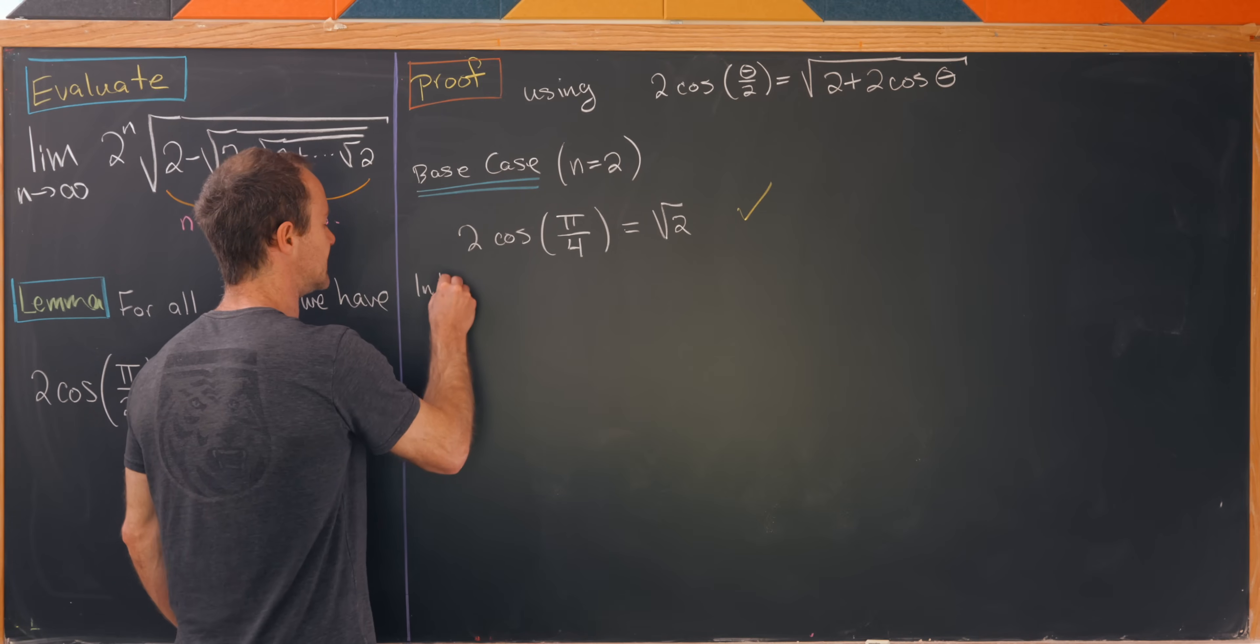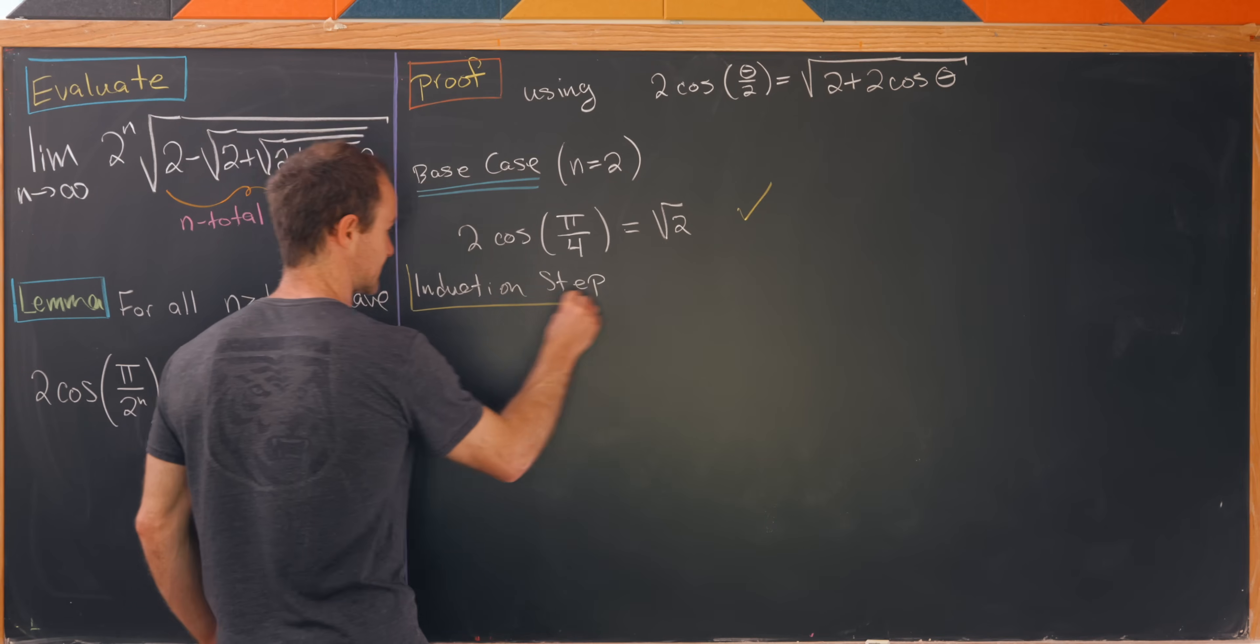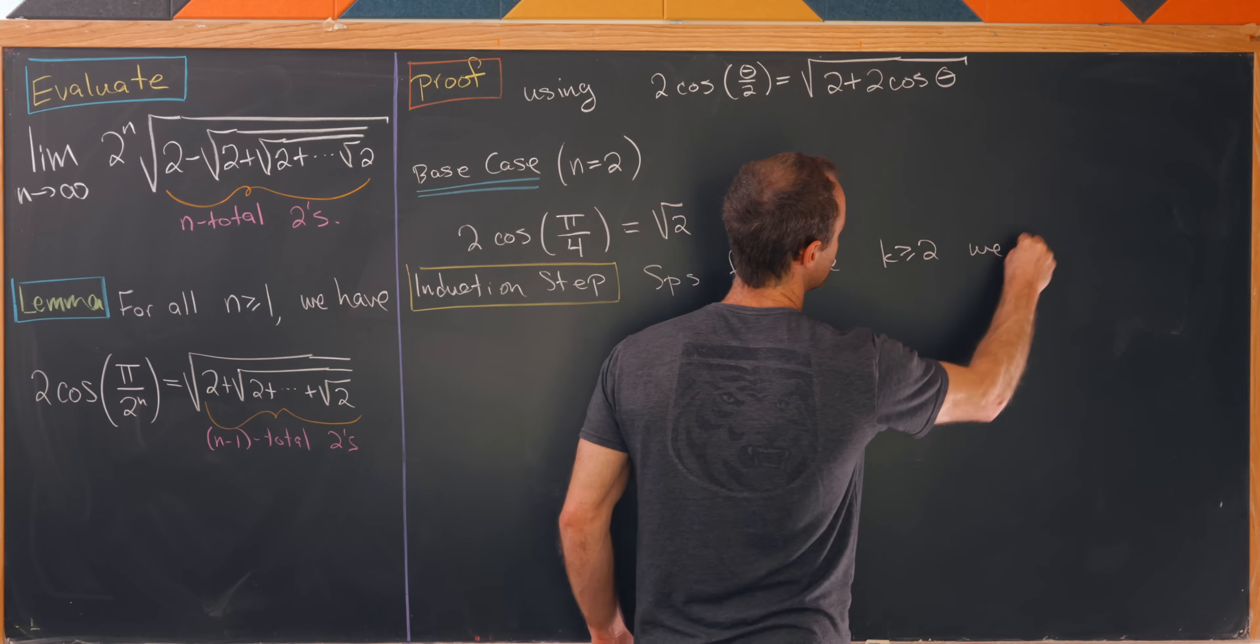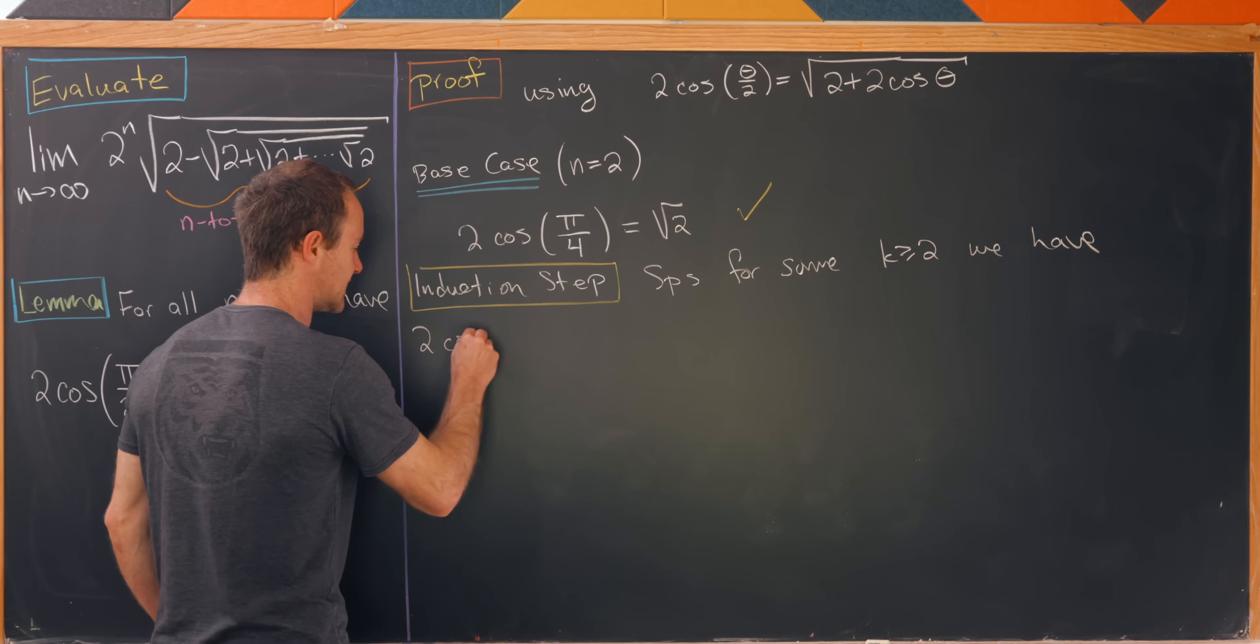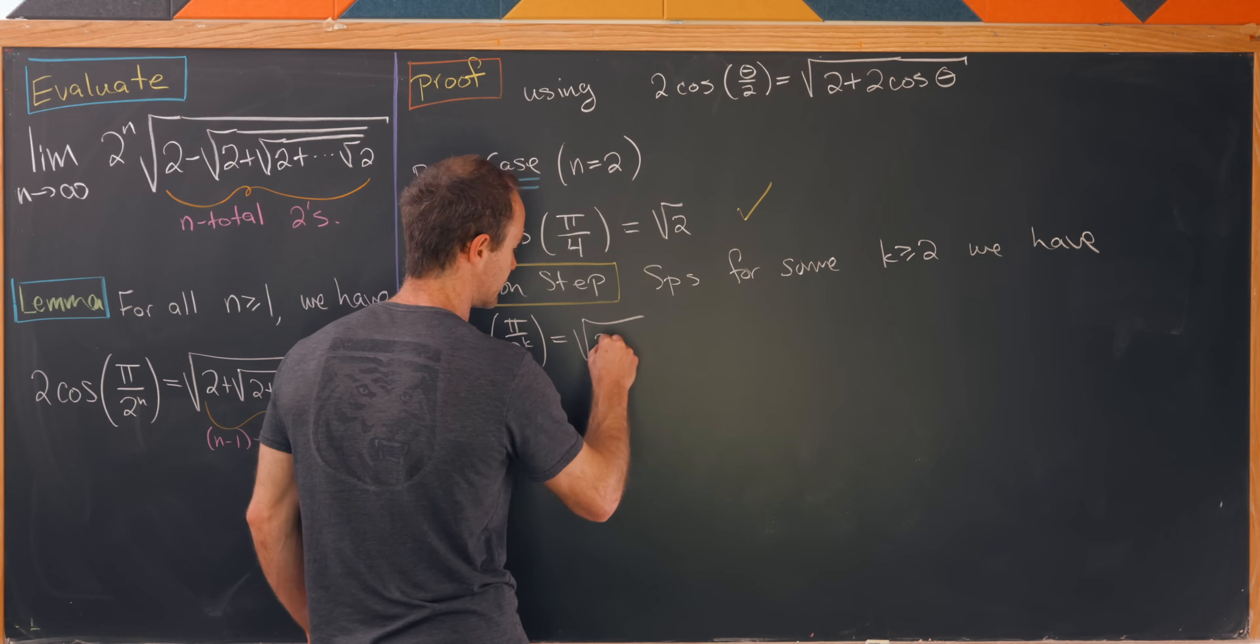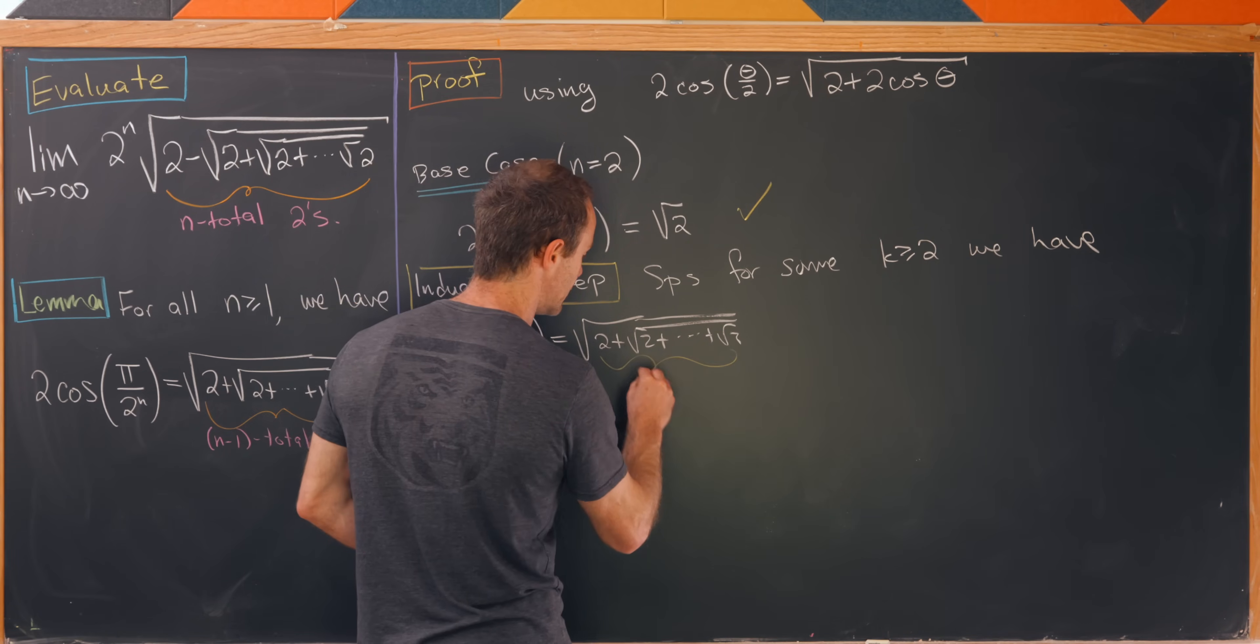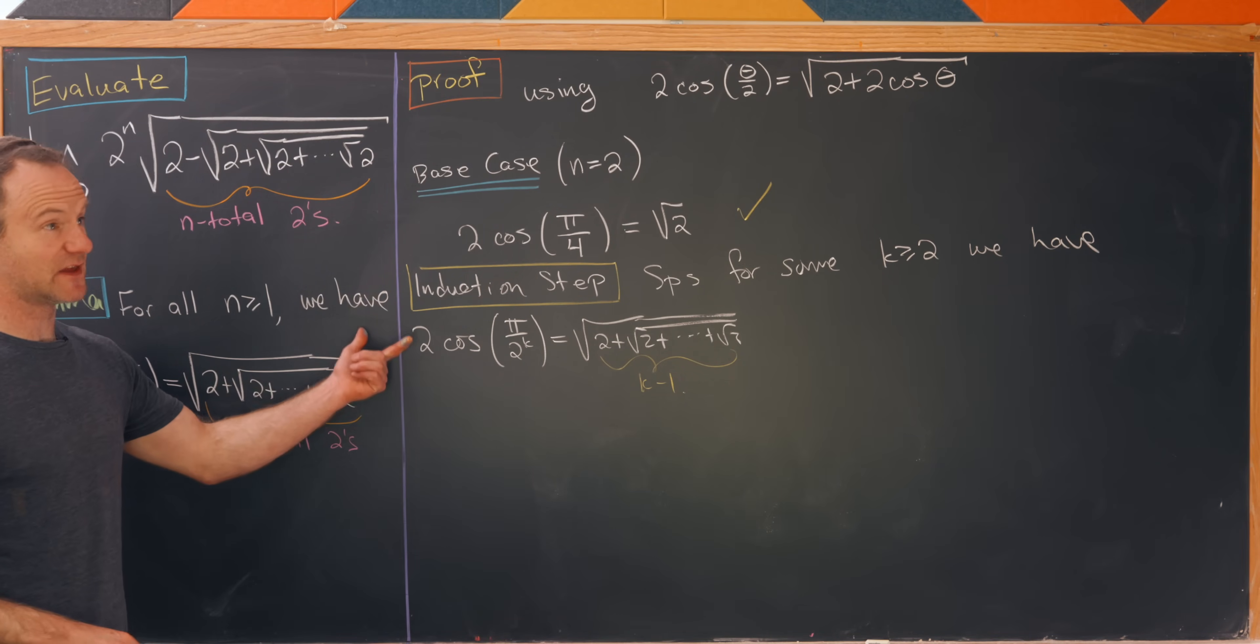Now we move on to the induction step. The induction step always starts with the induction hypothesis. So we'll suppose for some k greater than or equal to 2 that the formula holds. In other words, 2 times the cosine of pi over 2 to the k equals the square root of 2 plus the square root of 2, all of these nested square roots of 2 where we have exactly k minus 1 of them.